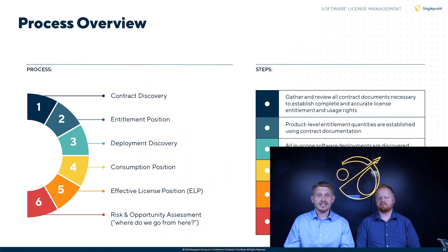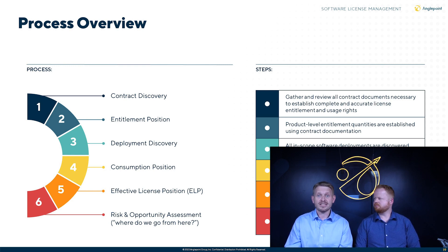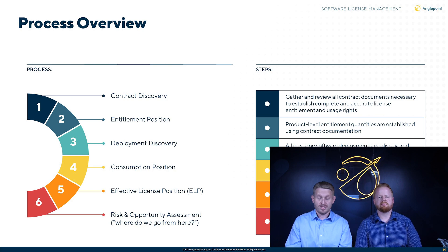First, you obviously want to do some contract discovery and gather all the relevant contract documents necessary to establish complete, accurate license entitlement and usage rights, and glean from those documents an entitlement position — a list of everything that you own and how many licenses. Once you have that, you want to go out and do discovery, understand your deployments, understand what you're consuming, and produce a consumption position of exactly what you're consuming and how it's measured.